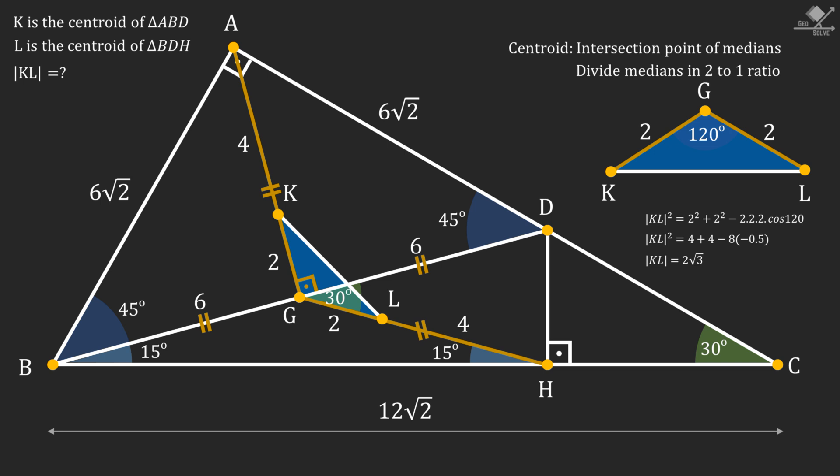Alternatively, we can drop a perpendicular from G, and use 30, 60, 90 triangles to reach the same answer. I hope you enjoyed this nice problem. I'll see you next time.